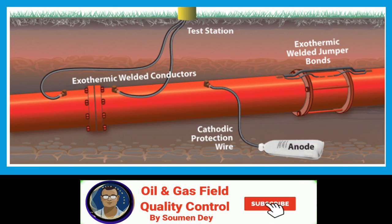How does a cathodic protection system work on a steel pipeline? The technique of providing cathodic protection to steel preserves the metal by providing a highly active metal that can act as an anode and provide free electrons. By introducing these free electrons, the active metal sacrifices its ions and keeps the less active steel from corroding.